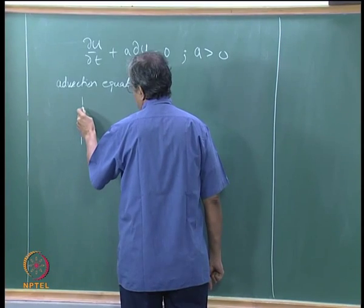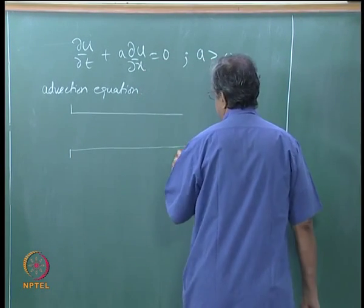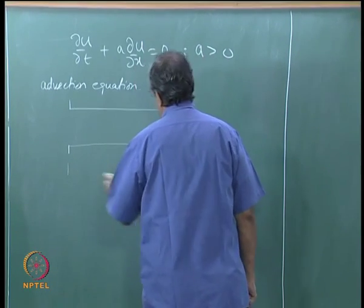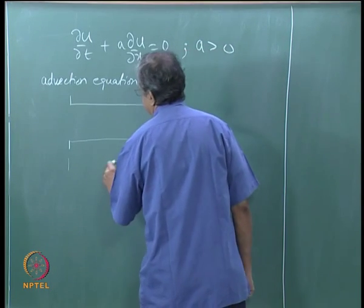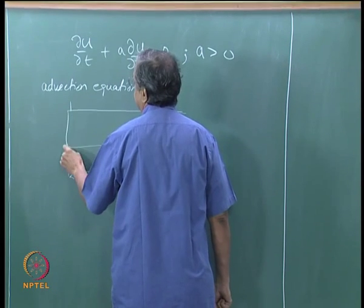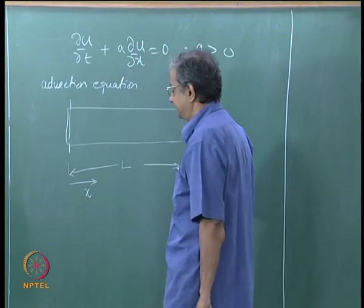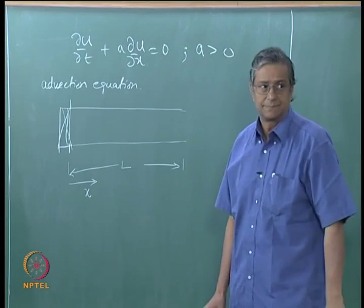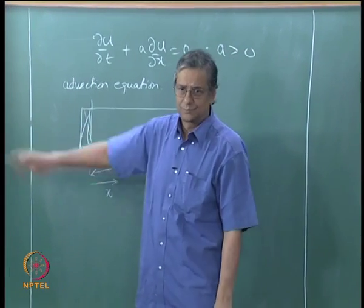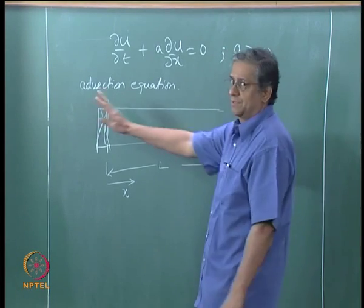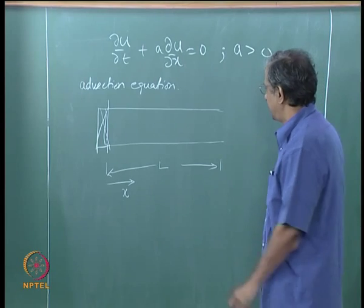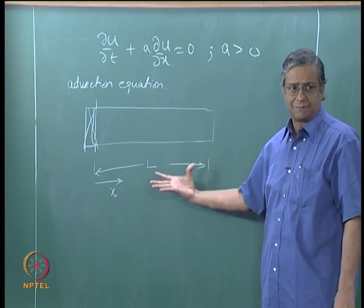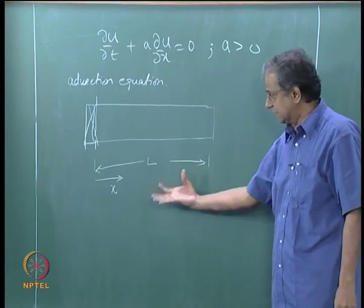I started talking about boundary conditions but did not quite state the problem. Let me state it now. We have a pipe of length L in the x direction. At the left-hand side there is a valve, and maybe there is hot water or hot air to the left. This pipe may go on forever but we are only interested in a length L.